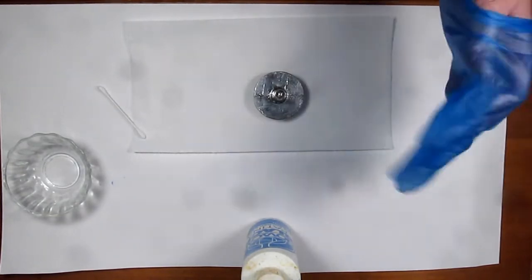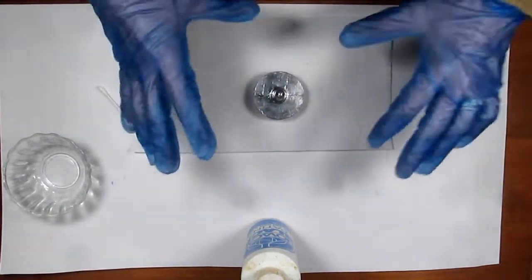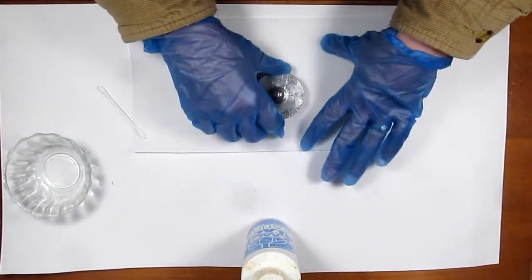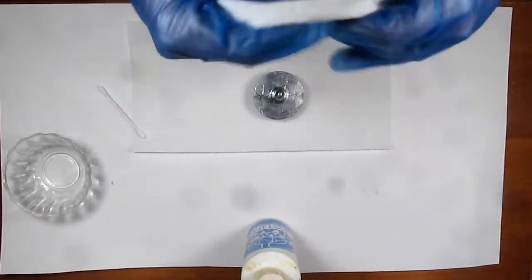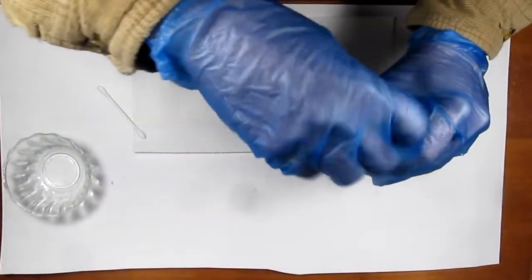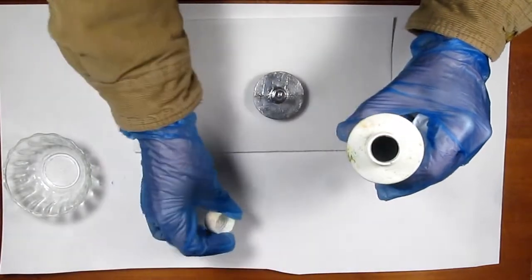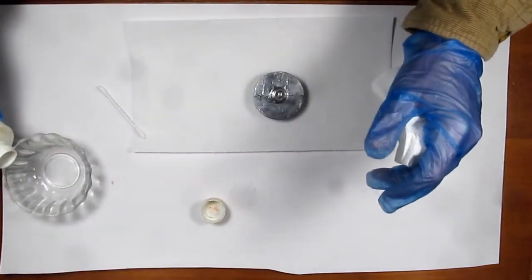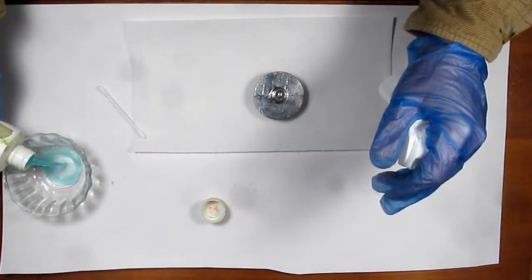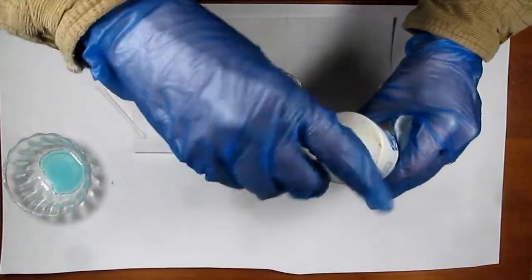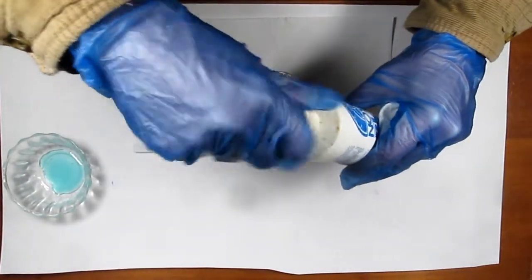Because this stuff is corrosive I'll be using disposable gloves. It won't take a whole lot to do this. I've had this bottle for many years because I haven't been doing stained glass for a while. Just add a little bit to a glass custard cup.